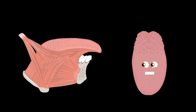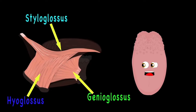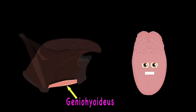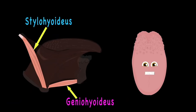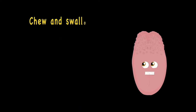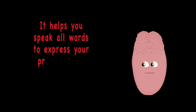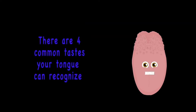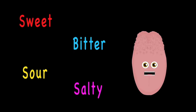The muscles in your tongue include the styloglossus, hyoglossus, and genioglossus — all ending in 'glossus.' Learning these muscles of your tongue is a must. Your tongue's main job is to help you chew and swallow all your food, and it also helps you speak all words to express your mood. The common tastes your tongue can recognize are four: sweet, sour, bitter, and salty — but sometimes you taste a fifth called umami.